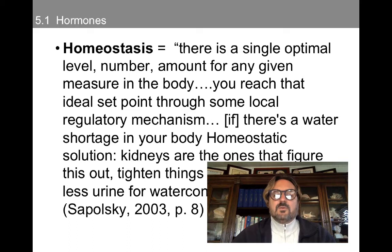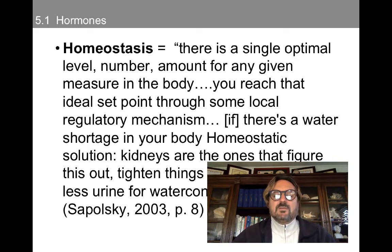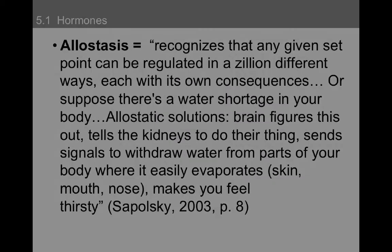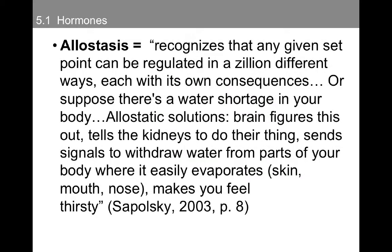I'm going to quote Robert Sapolsky here. I really like his description of homeostasis — that there is a single optimal level, number, and amount for any given measure in the body. You reach that ideal set point through some local regulatory mechanism. For instance, if there's a water shortage, your body's homeostatic solution, as the kidneys are the ones that figure this out, is to tighten things up and produce less urine for water conservation. Now this is different from the newer idea of allostasis, which recognizes that any given set point can be regulated in a zillion different ways, each with its own consequences.